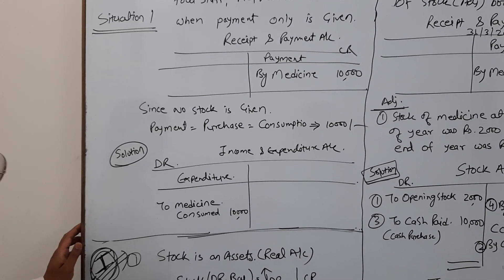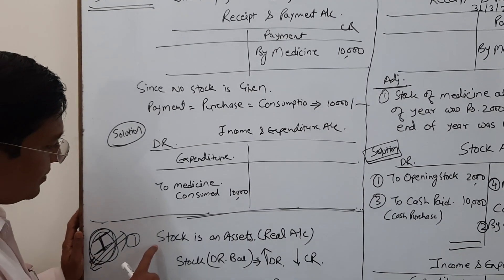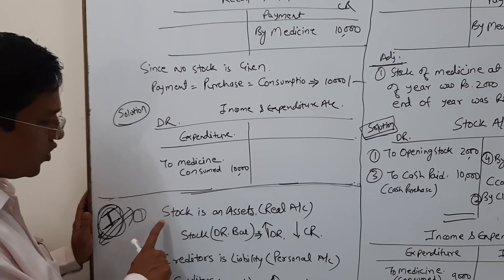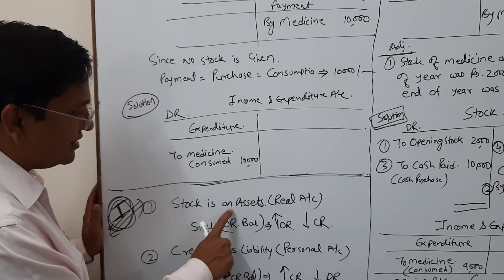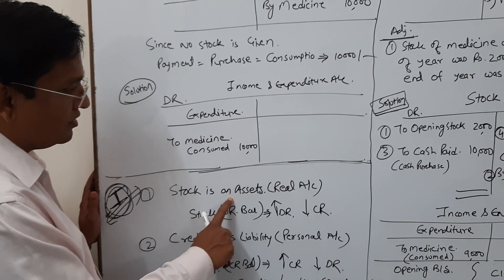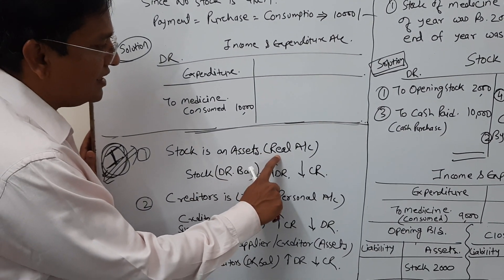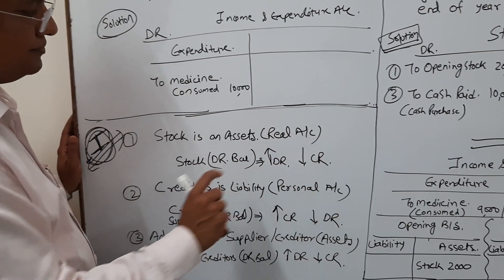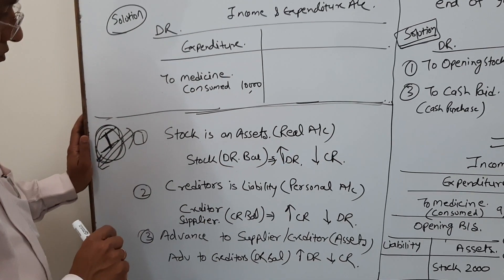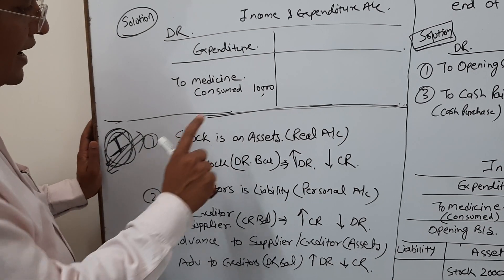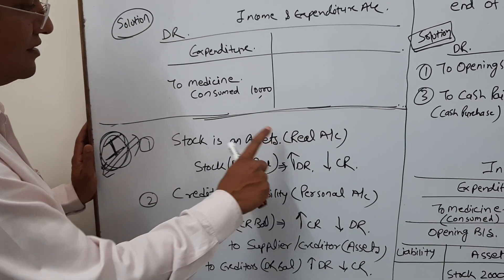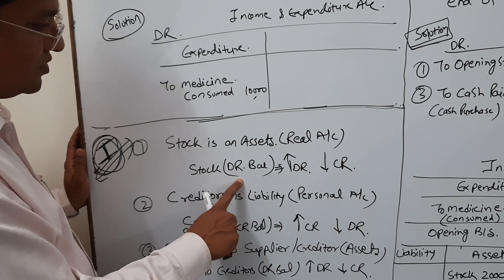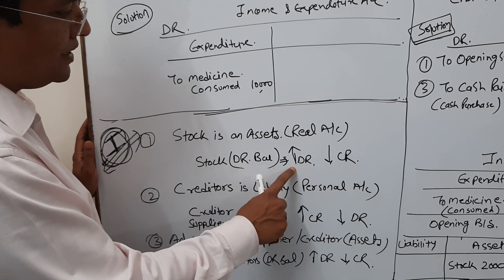First basic concept: stock account. Stock is an asset, which means it is real account in nature. Being an asset, it carries a debit balance.